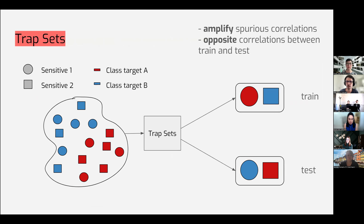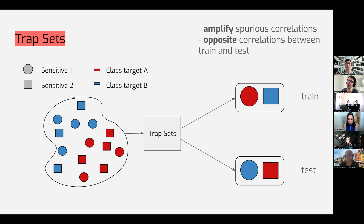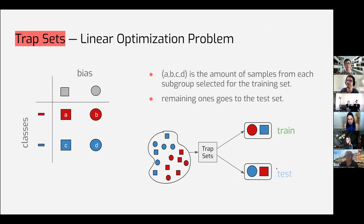Our solution was exactly trap sets. Trap sets is a training-test separation that is the result of an optimization problem. The idea is that we want to control the levels of bias - basically amplify correlations in the training data - while at the same time having opposite correlations between training and test. In this simplified scenario with just two variables for bias, we have presence or absence of one specific characteristic, for example a ruler, and a binary classification task. The classification task is described by color and the bias by shape. Ideally, when dividing into training and test, the model that learned to classify based on shape will heavily fail on test.